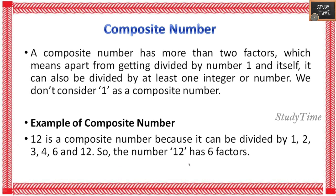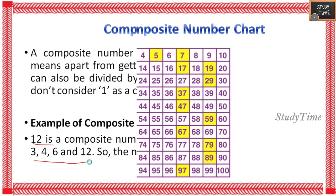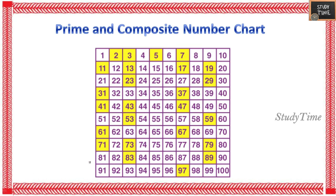Next, composite numbers. A composite number has more than two factors, which means apart from being divided by 1 and itself, it can be divided by at least one other integer. We don't consider 1 as a composite number. For example, 12 is a composite number because 12 can be divided by 1, 2, 3, 4, 6, and 12 — so 12 has 6 factors. A prime and composite number chart is shown here; numbers highlighted in yellow are prime numbers, and the others are composite numbers.